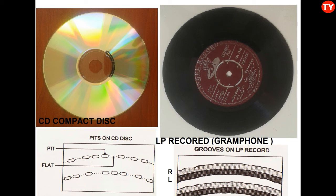In CDs, left and right channel information is stored separately. In gramophone records, left and right channel information is stored simultaneously. In CDs, there is no crosstalk problem between the two channels, whereas in gramophone records, crosstalk between the two channels can sometimes occur.